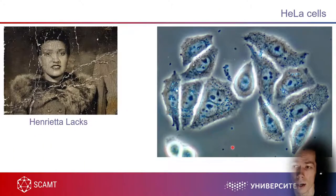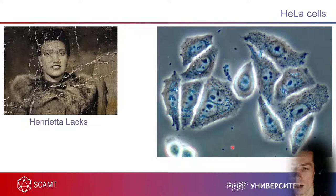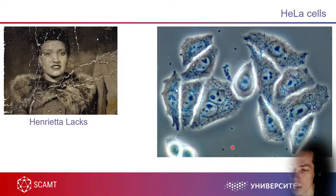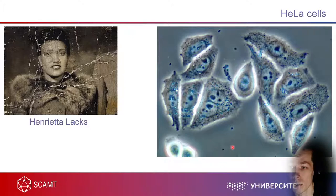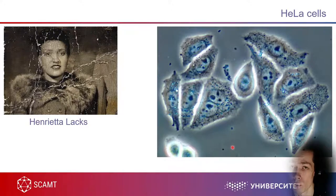Now let's go to HeLa cells. Henrietta Lacks is here, and these are the HeLa cells. What is so special about HeLa cells? Scientists and researchers in many laboratories all over the world still work with HeLa cells — they are still alive. We may say Henrietta Lacks is immortal and living even now. Almost 70 years have passed, and these cells are immortal because they can divide an unlimited number of times, due to telomerase enzyme.